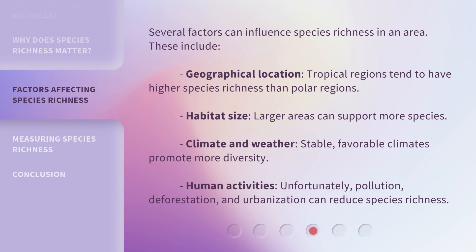Several factors can influence species richness in an area. These include geographical location — tropical regions tend to have higher species richness than polar regions. Habitat size — larger areas can support more species. Climate and weather — stable, favorable climates promote more diversity. And human activities — unfortunately, pollution, deforestation, and urbanization can reduce species richness.